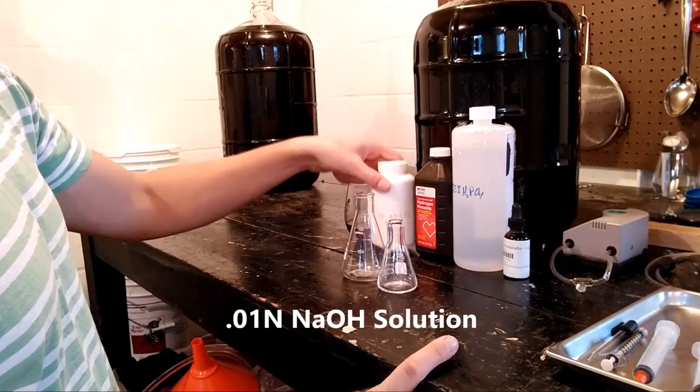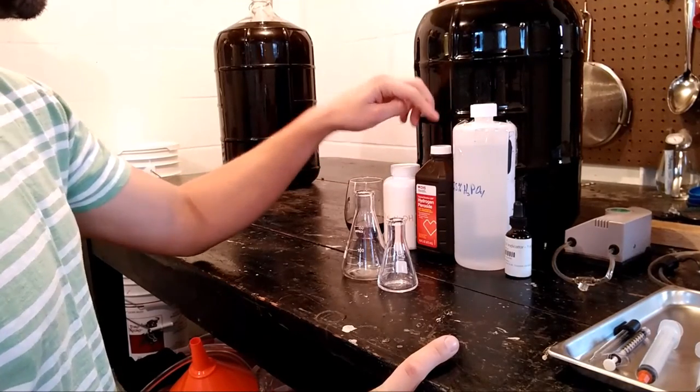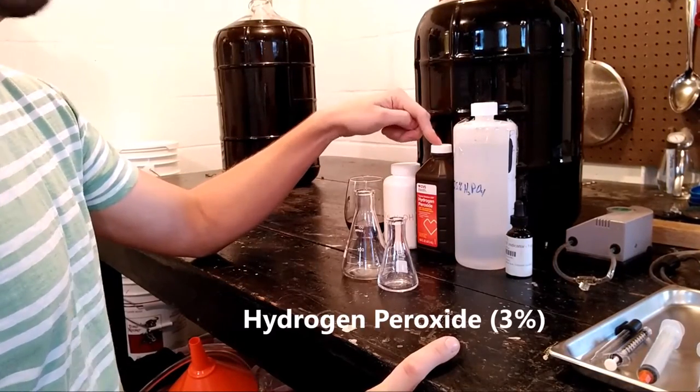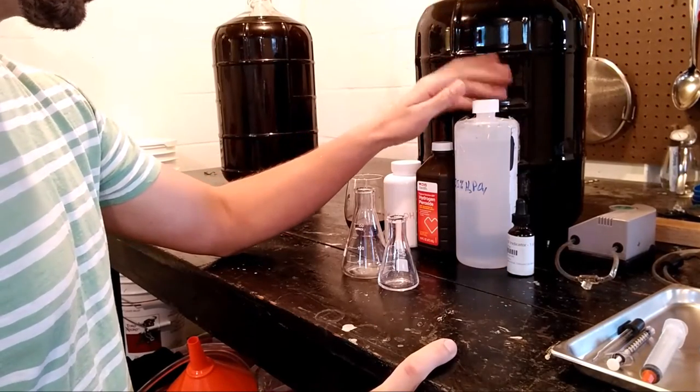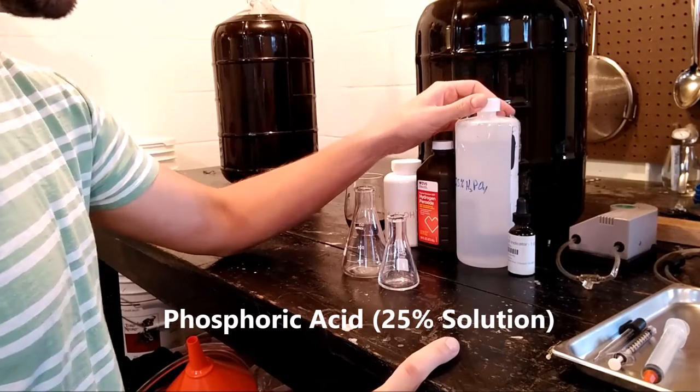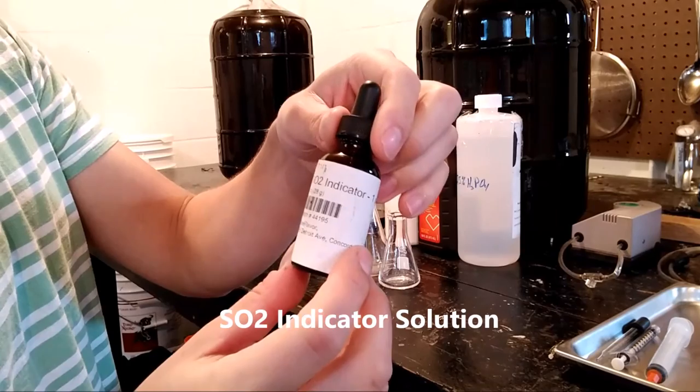You need 0.01% sodium hydroxide, 3% hydrogen peroxide like you get at the drugstore, 25% phosphoric acid, and this SO2 indicator stuff.